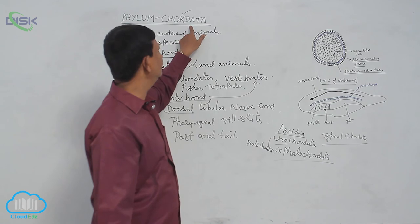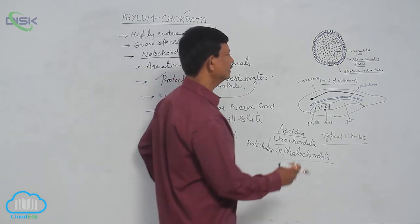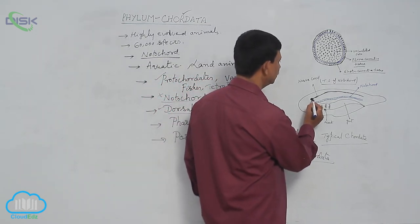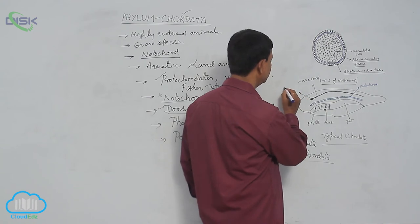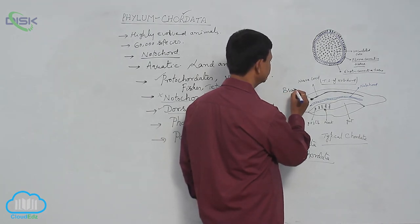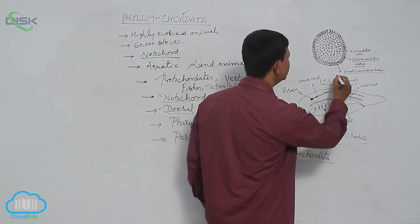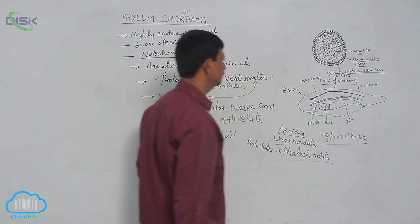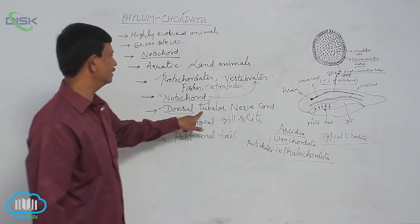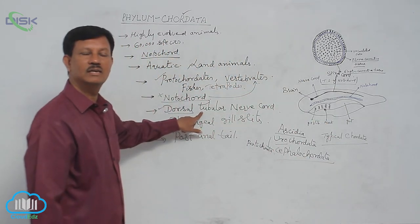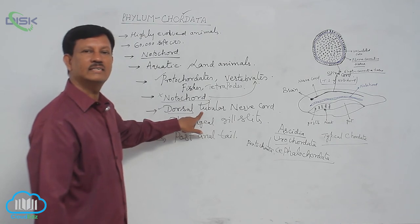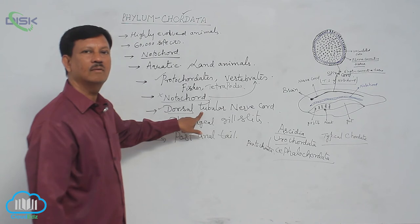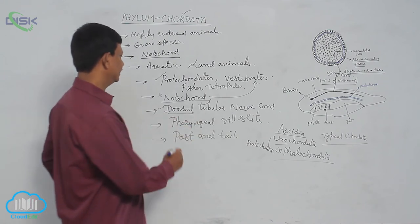Chordates are highly evolved animals. The anterior part of the nerve cord develops into the brain, and the remaining part develops into the spinal cord. These are the main characters of the dorsal tubular nerve cord. It controls and coordinates all the activities of the body.